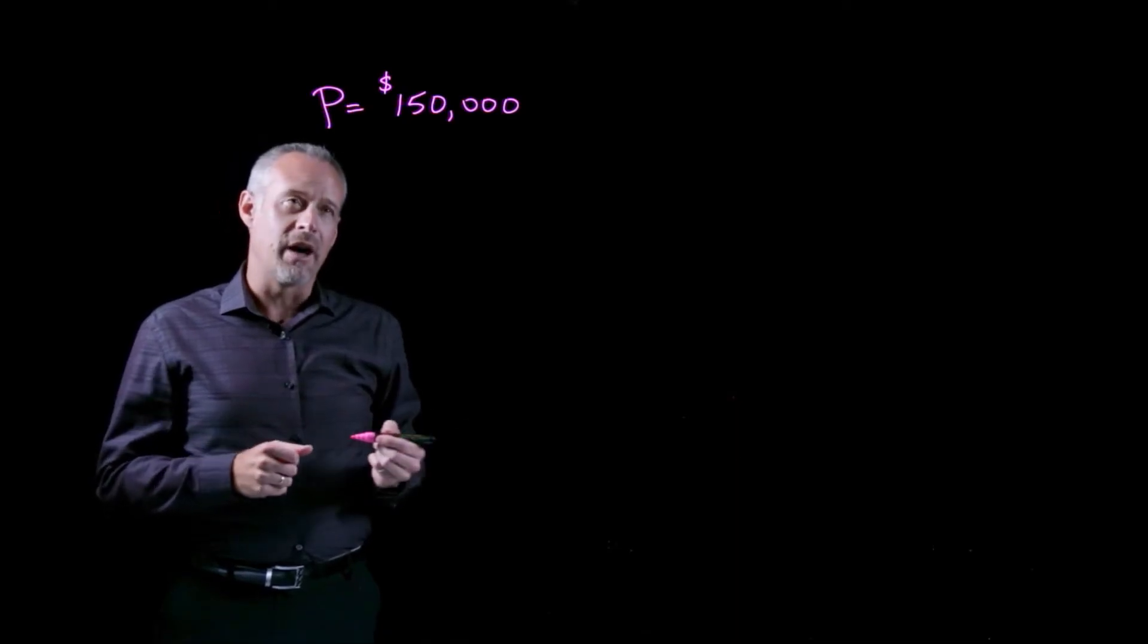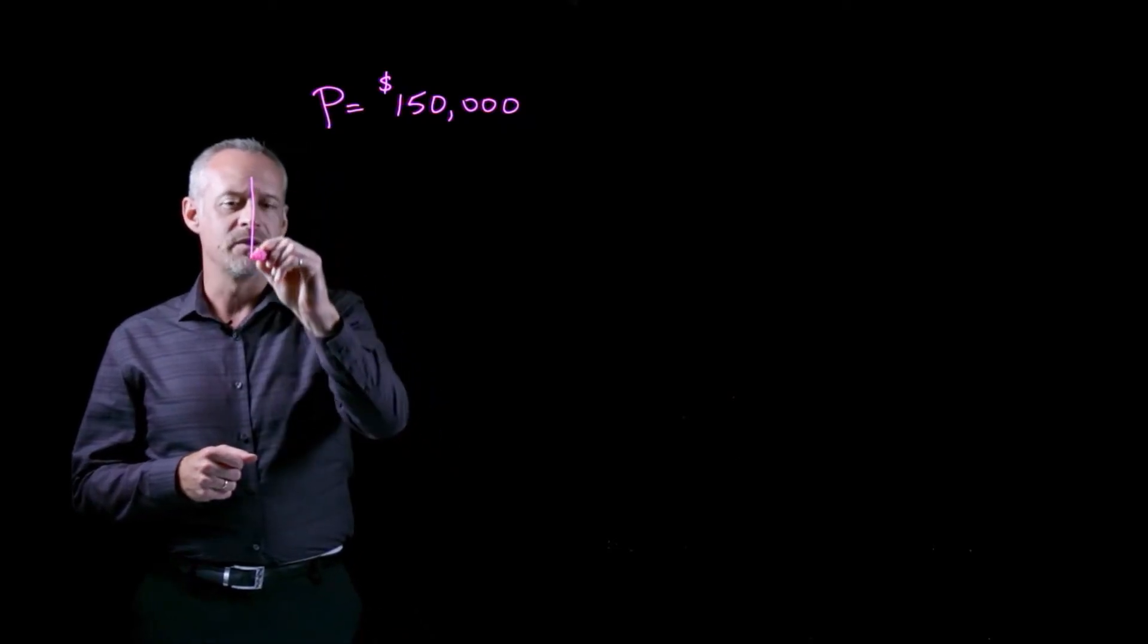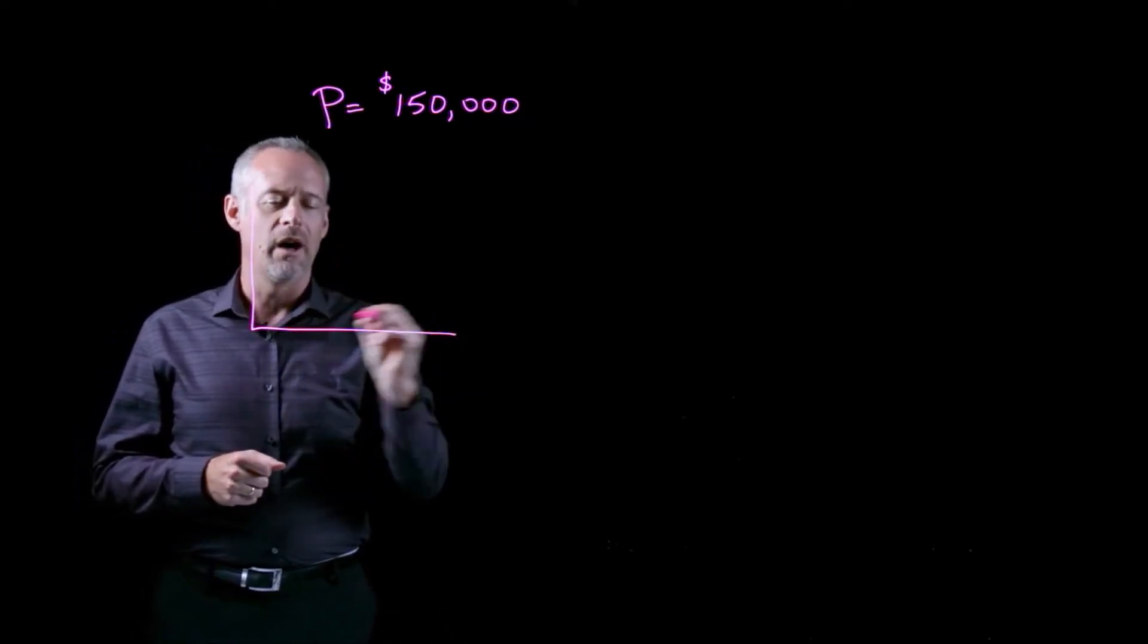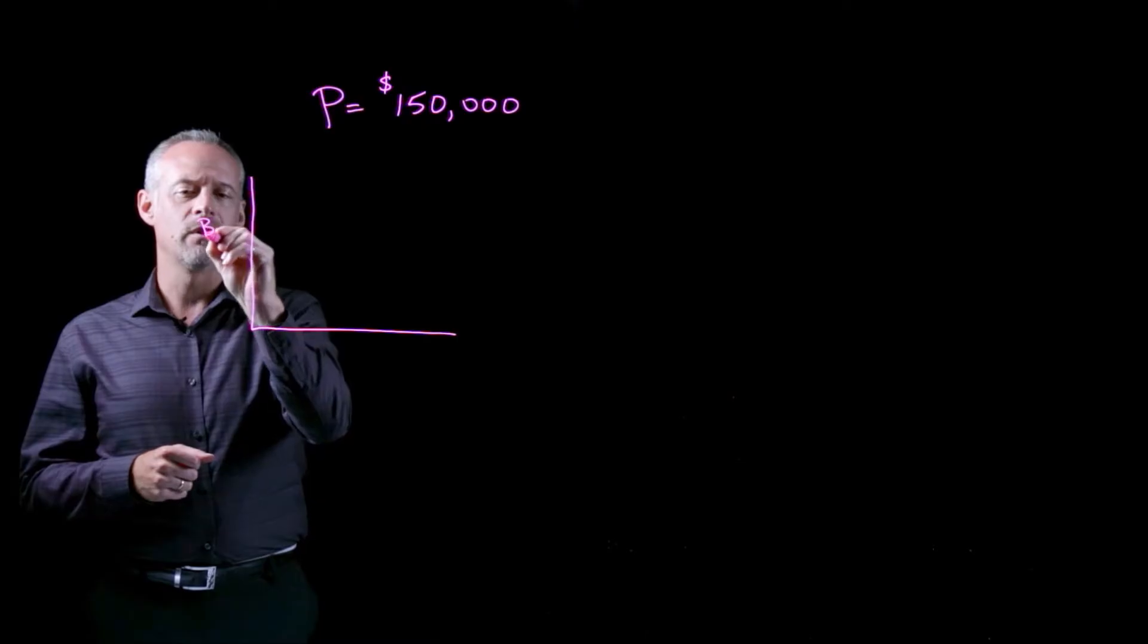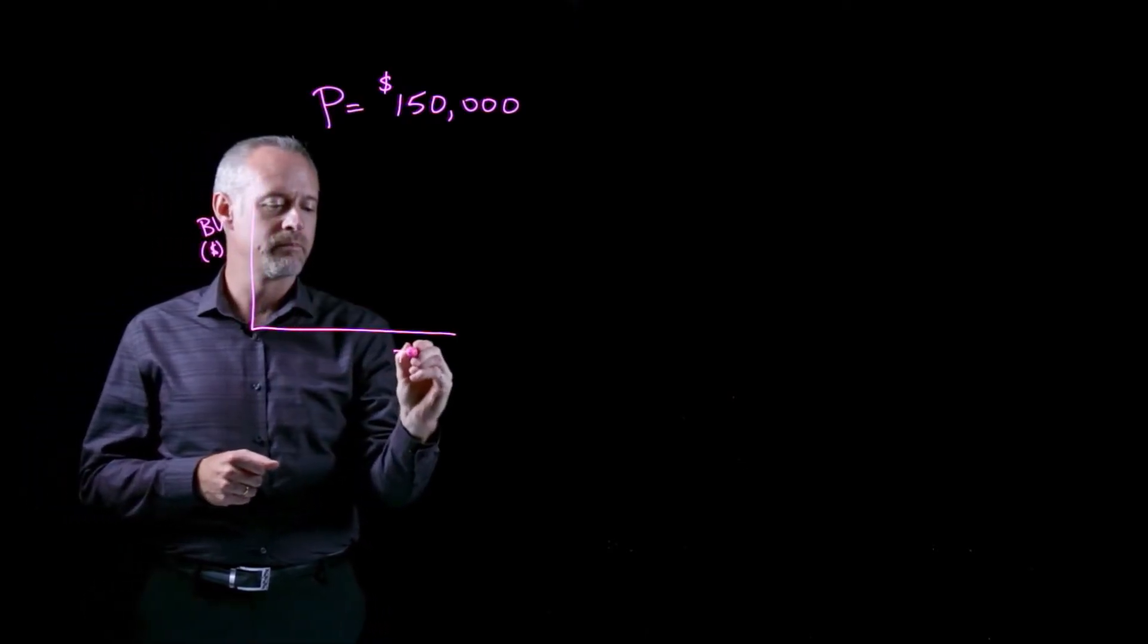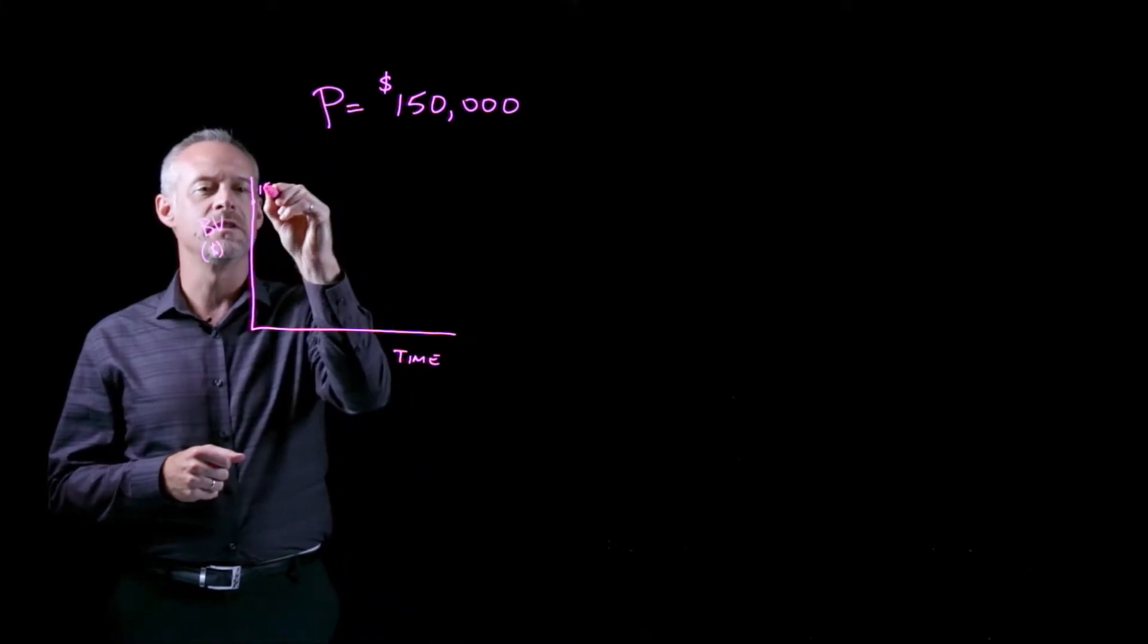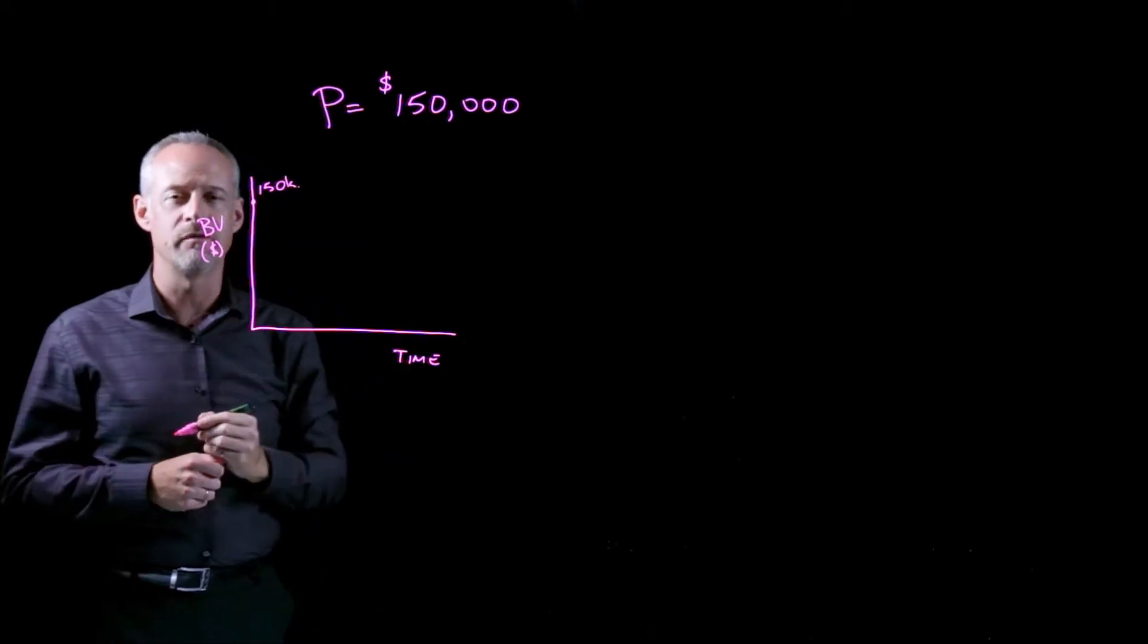In contrast to the straight line depreciation, if we view declining balance depreciation as the same type of graph where we look at the book value of the asset over time, and we start with a certain purchase price, so for instance, in this case, $150,000,